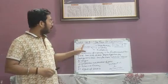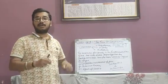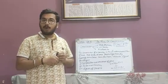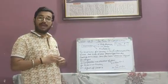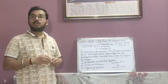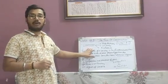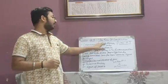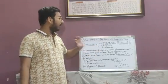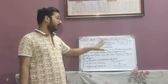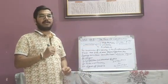A Constitution was made so that every person, whether he is rich or poor, belongs to any community, belongs to any sex, should feel equal before the law. In our present-day Constitution, there are 448 Articles, 25 Parts and 12 Schedules, which contain different laws for different purposes.